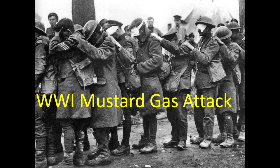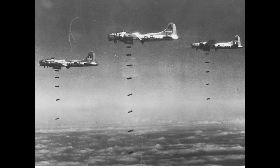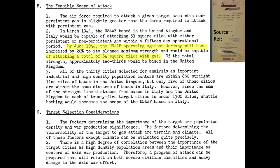These gases were mainly dispersed by artillery or gas canisters in World War I. In World War II, the U.S. planned on dispensing the chemical agents solely via the 4,000 B-17 and B-24 bombers available. By the D-Day landings, the U.S. Army Air Force had the capability to carpet bomb 64 square miles of Germany's urban core, as discussed on page 1 of the report.